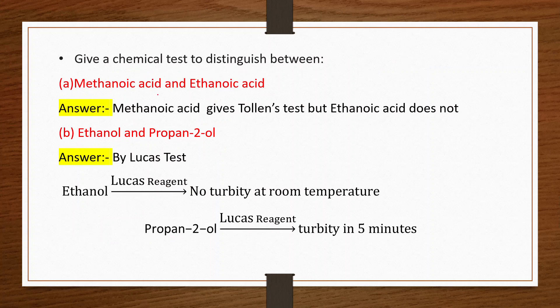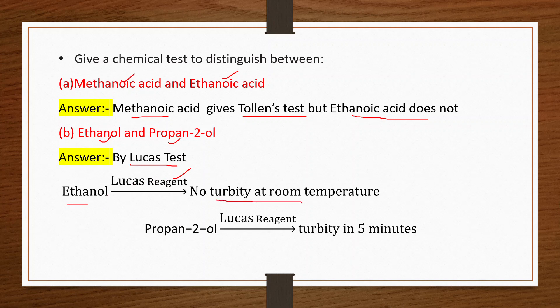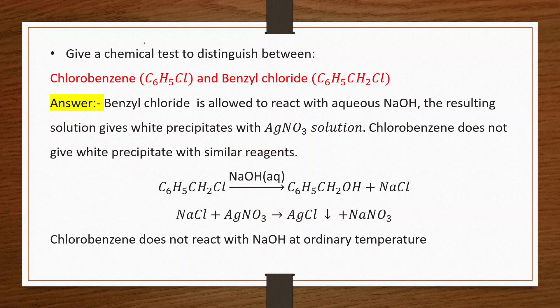To distinguish methanoic acid from ethanoic acid: both are carboxylic acids, but methanoic acid gives the Tollens test while ethanoic acid does not. To distinguish ethanol (primary alcohol) from propan-2-ol (secondary alcohol): use the Lucas test. Ethanol treated with Lucas reagent shows no turbidity at room temperature, while propan-2-ol treated with Lucas reagent gives turbidity in five minutes.